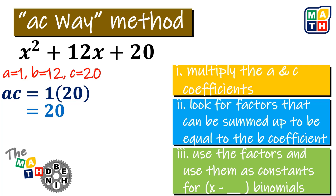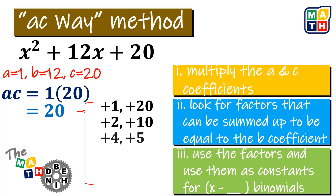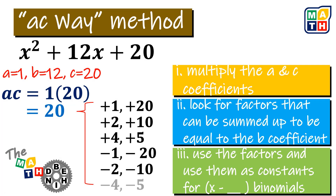For step number two, we need to find pairs of factors that will result in 20. We have the following: positive 1 and positive 20; positive 2 and positive 10; positive 4 and positive 5. Aside from these pairs of positive integers, positive 20 could also be expressed as the product of negative 1 and negative 20; negative 2 and negative 10; and negative 4 and negative 5.